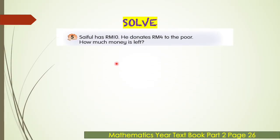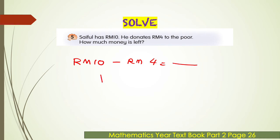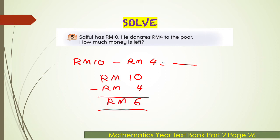Example five. Saiful has 10 ringgit. He donates 4 ringgit to the poor. How much money is left? This is a subtraction problem. The number sentence is: 10 ringgit minus 4 ringgit equals what? Arrange in standard written method — 10 ringgit above and 4 ringgit below. 10 ringgit minus 4 ringgit is 6 ringgit. The answer is 6 ringgit — he has 6 ringgit left.